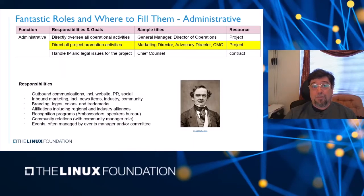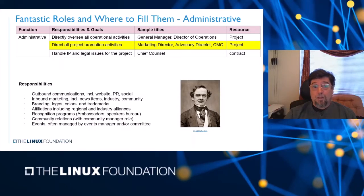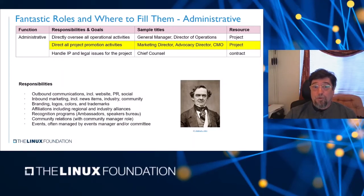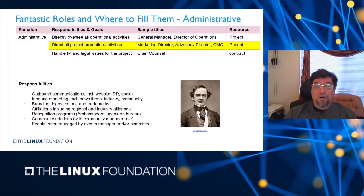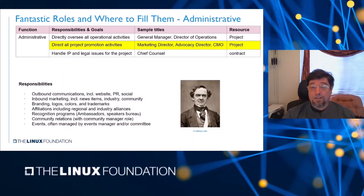The marketing director role incorporates many expectations, primarily outbound marketing communications including website content, press releases, public statements, social media accounts, and video production. This role handles inbound marketing, including tracking and republishing news items and knowing what's going on with the industry and community. It also handles branding — logos, colors, and the trademarks associated with all of those things — affiliations including regional and industry alliances, community recognition programs such as an ambassador program and speakers bureau, community relations, and events, which is very often managed by both a separate events manager and a board committee. The community manager role often reports to the director of marketing. I'm probably only capturing about half of what this role does — if the project is visible in any way, it is likely the responsibility of this person.